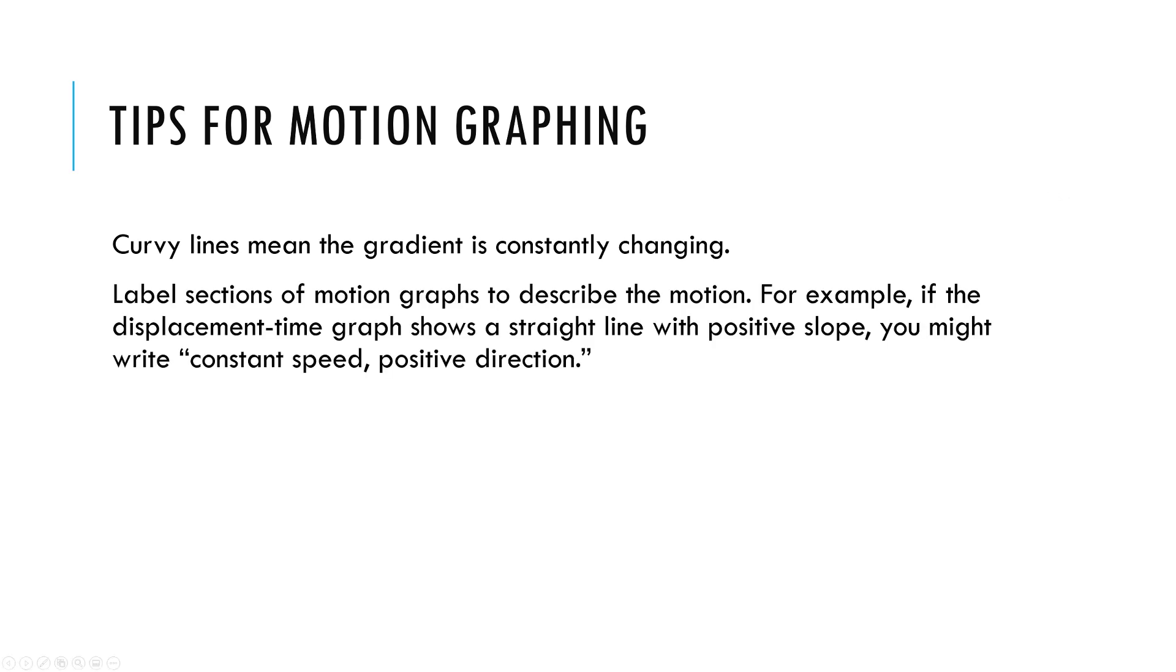It's really good to label sections because this forces you to slow down. Like if you see a displacement time graph with a positive slope, you can say, hey, that's a positive velocity. So constant speed in the positive direction. Really just take the time to jot some notes down about things that you know for sure from the graph. It'll force you to stop yourself and think and not go with your first picture what you think the graph is saying because you're conditioned to read graphs in a certain way. And these are pretty different.